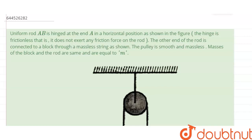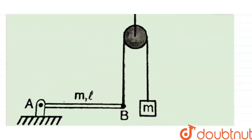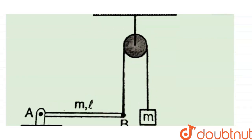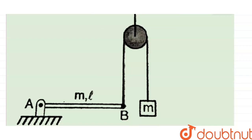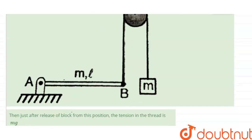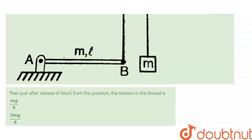A uniform rod AB is hinged at end A in a horizontal position as shown in the figure. The hinge is frictionless — it does not exert any friction force on the rod. The other end of the rod is connected to a block through a massless string via a smooth, massless pulley. The masses of the block and the rod are the same and equal to m. The rod has mass m and length L, hinged at point A, and the block at point B is connected via the pulley to a hanging block of mass m.